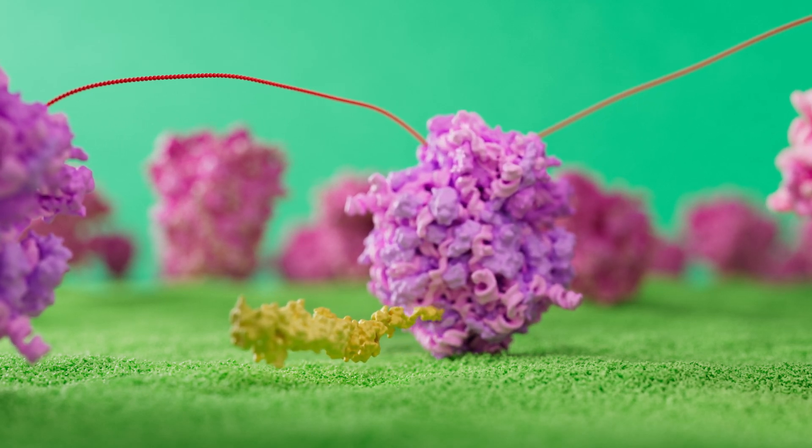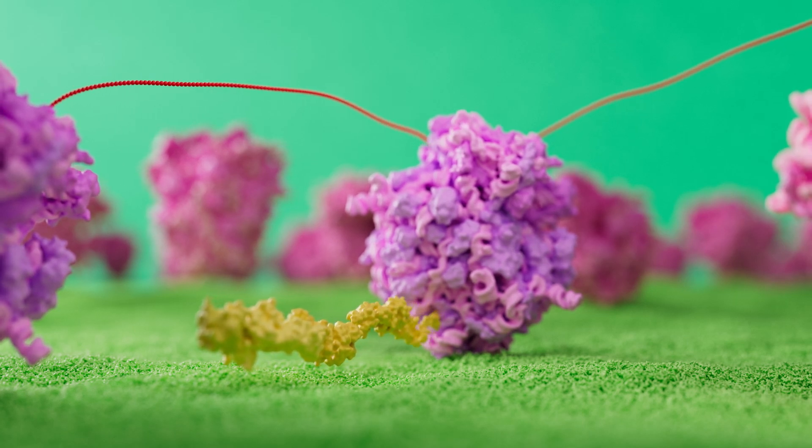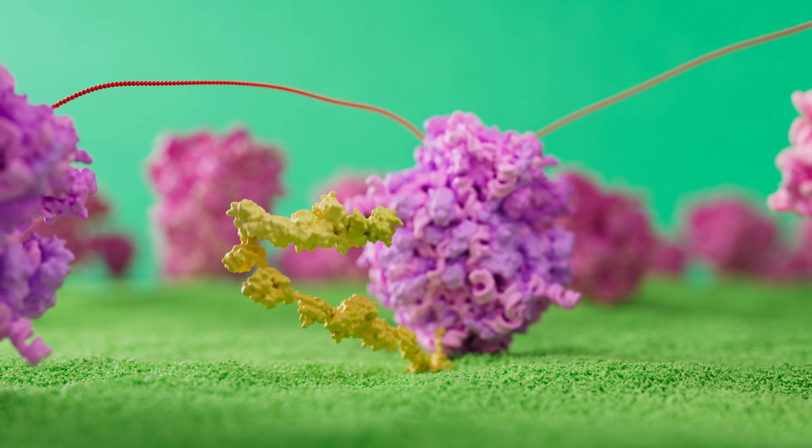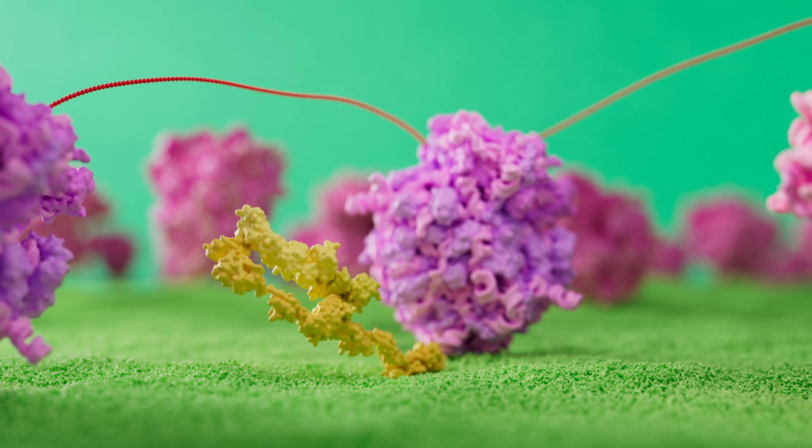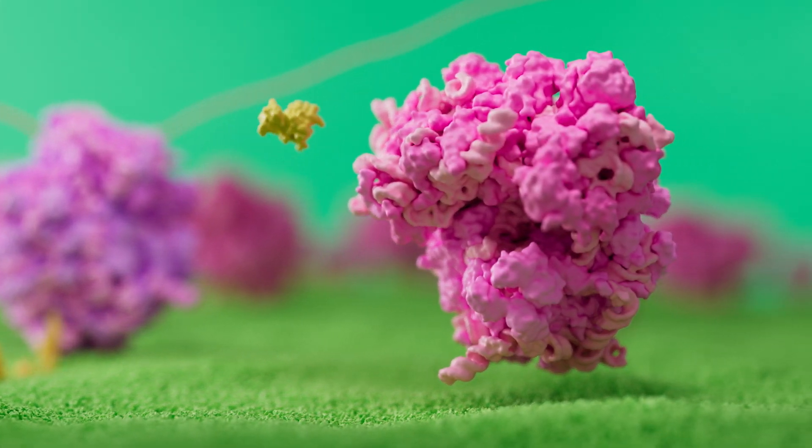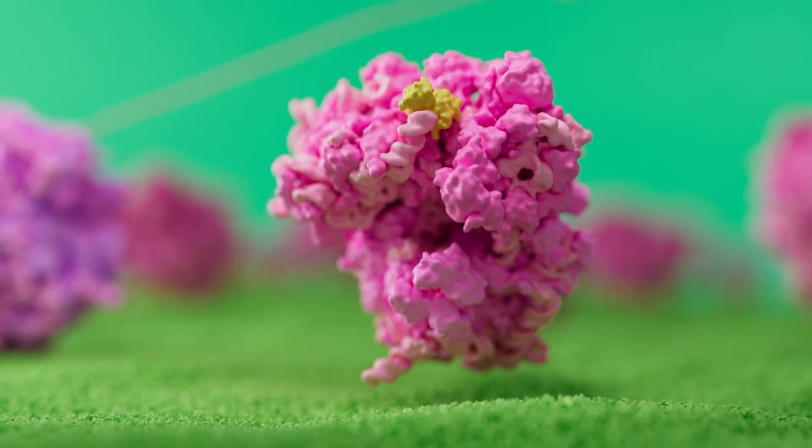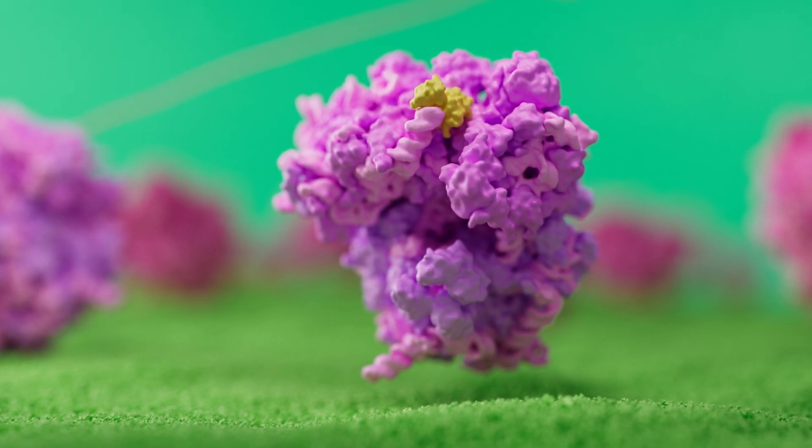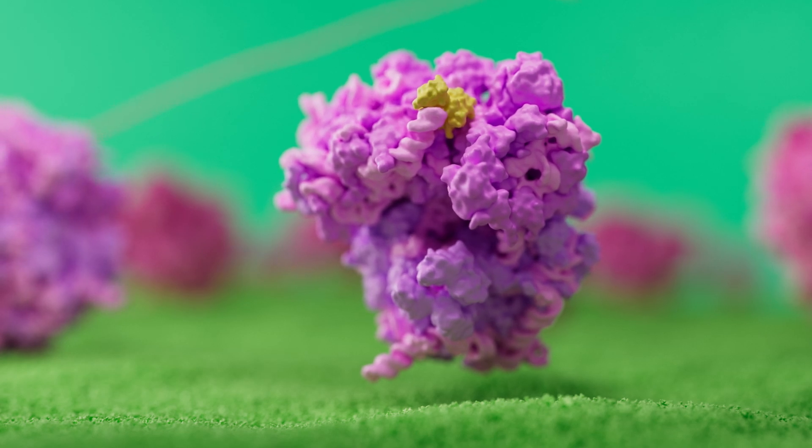Initially, these NSPs are all attached to one another, but some of the NSPs are able to cut the chain. The result of this cutting is the release of another NSP, which is able to grab on to a ribosome and occupy it in such a way that the ribosome can only read viral RNA, and not the host cell's own RNA.